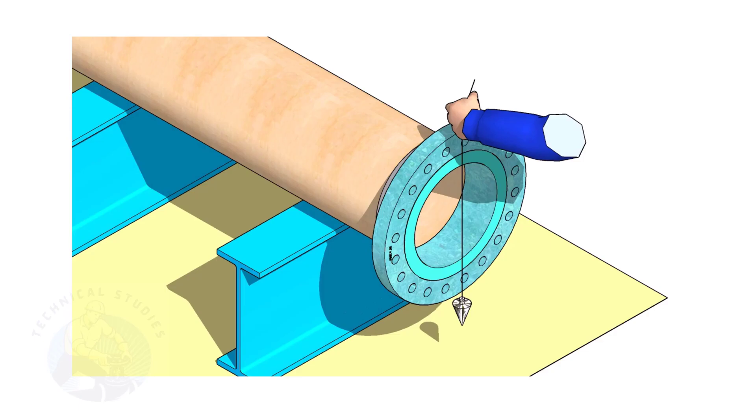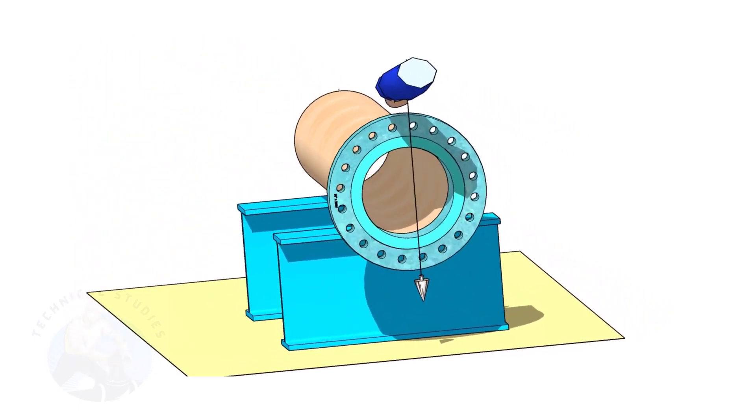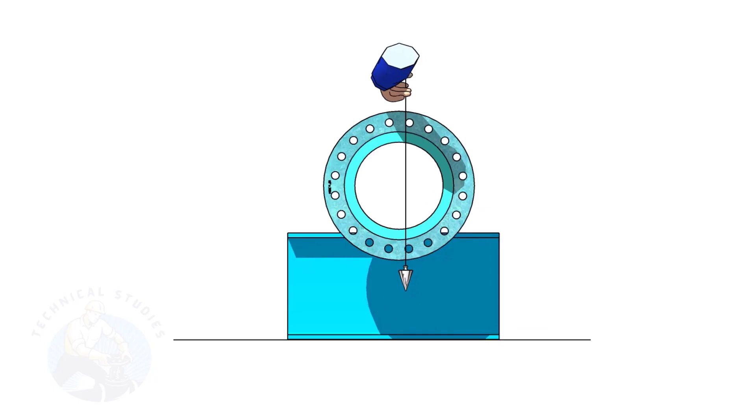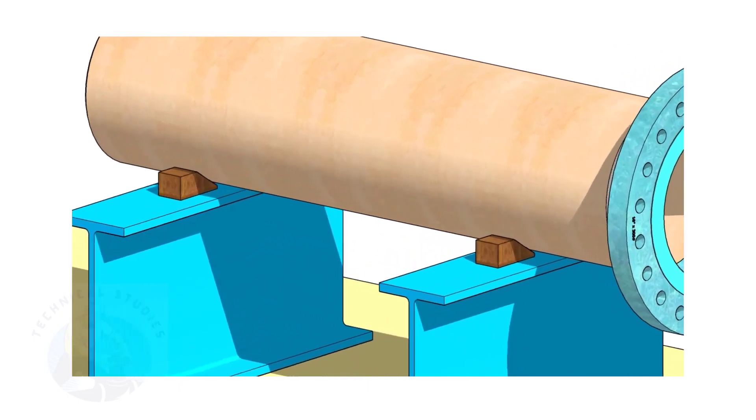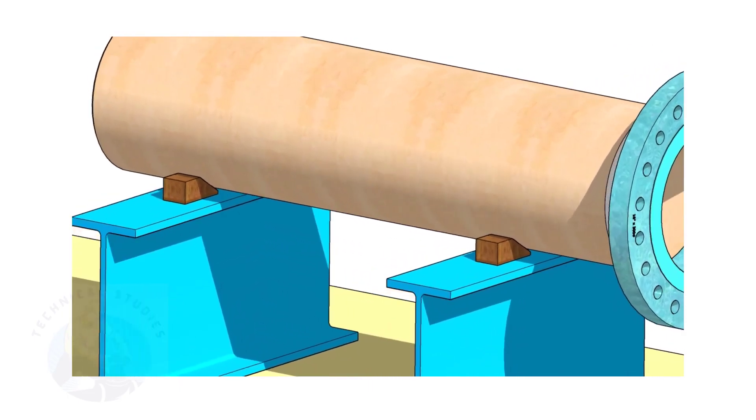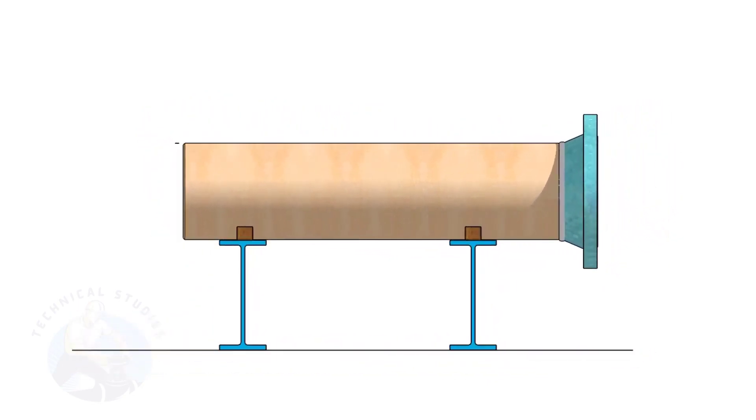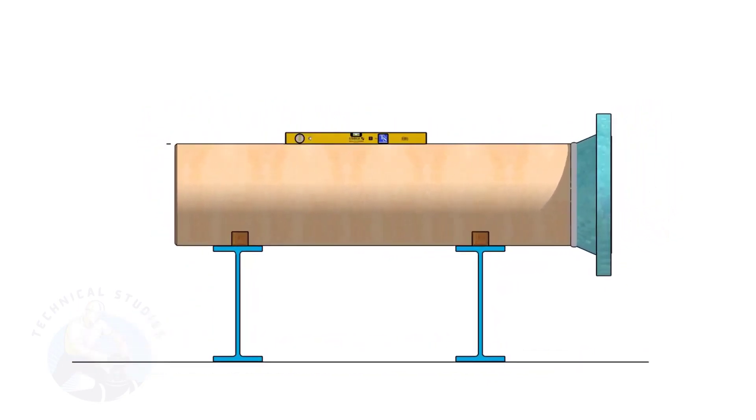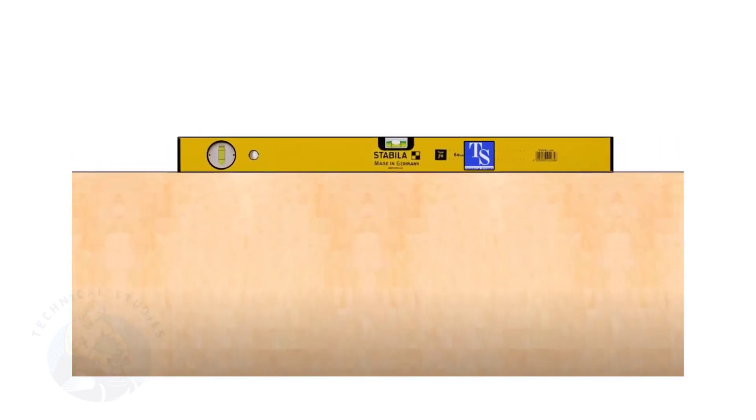Choose a set of holes closer to the center of the flange. This will ensure more accuracy. Provide proper supports on both sides of the pipe to prevent rotation. Correct the level of the pipe. Check the plumbness of the flange a second time.